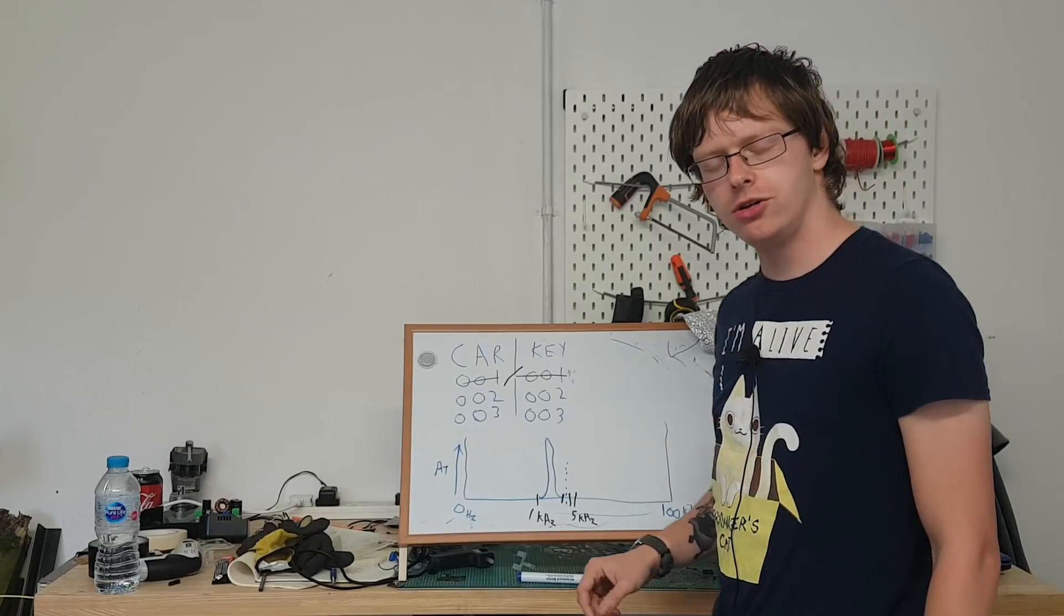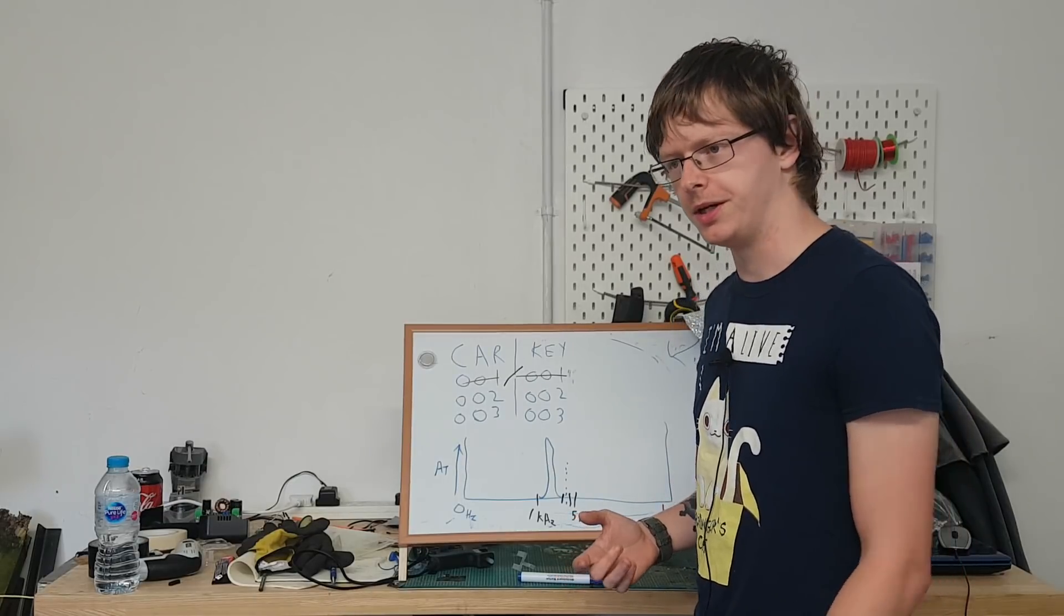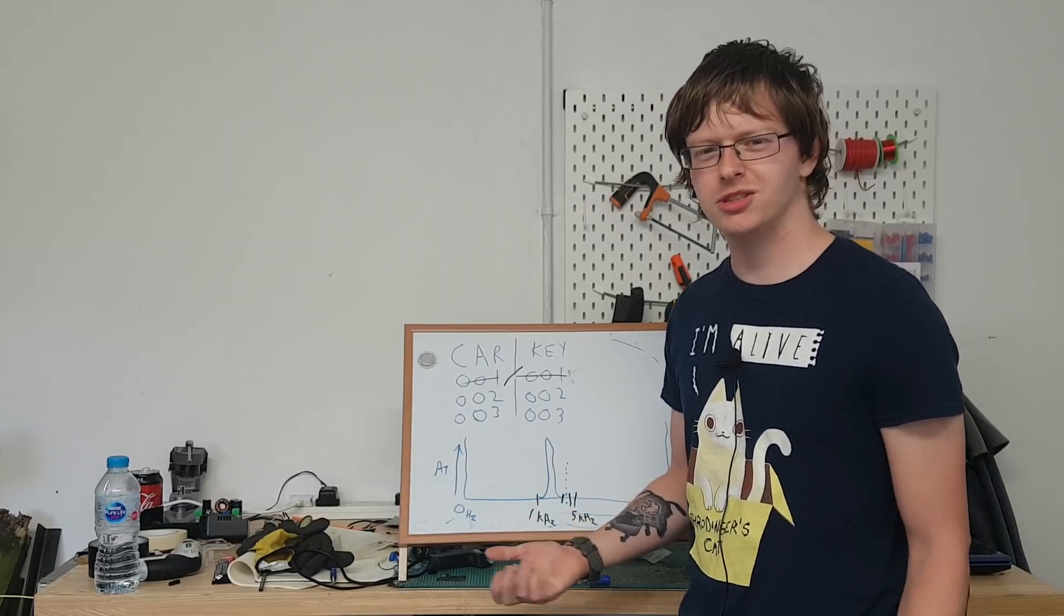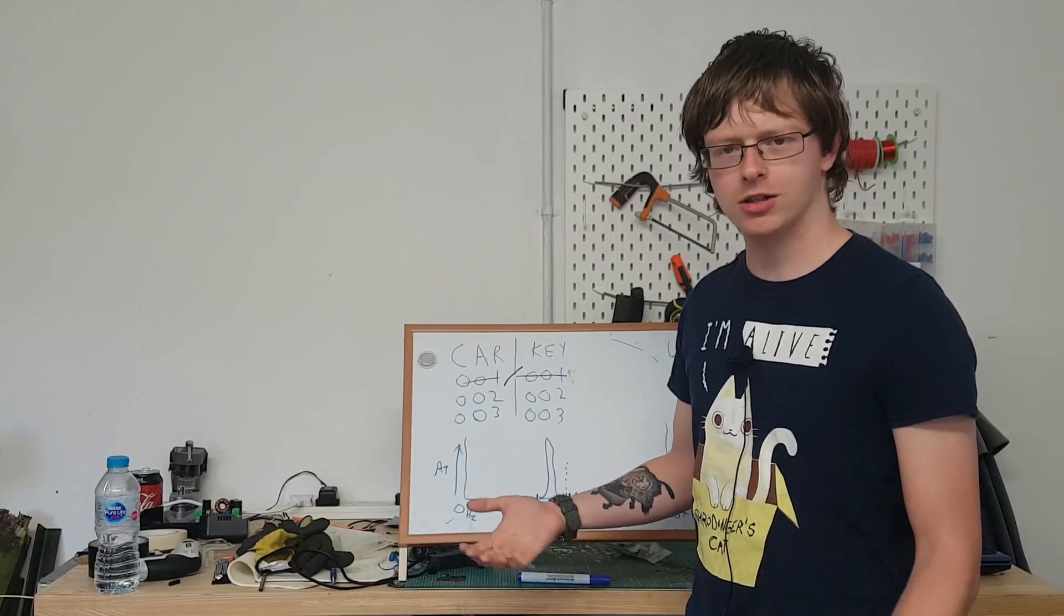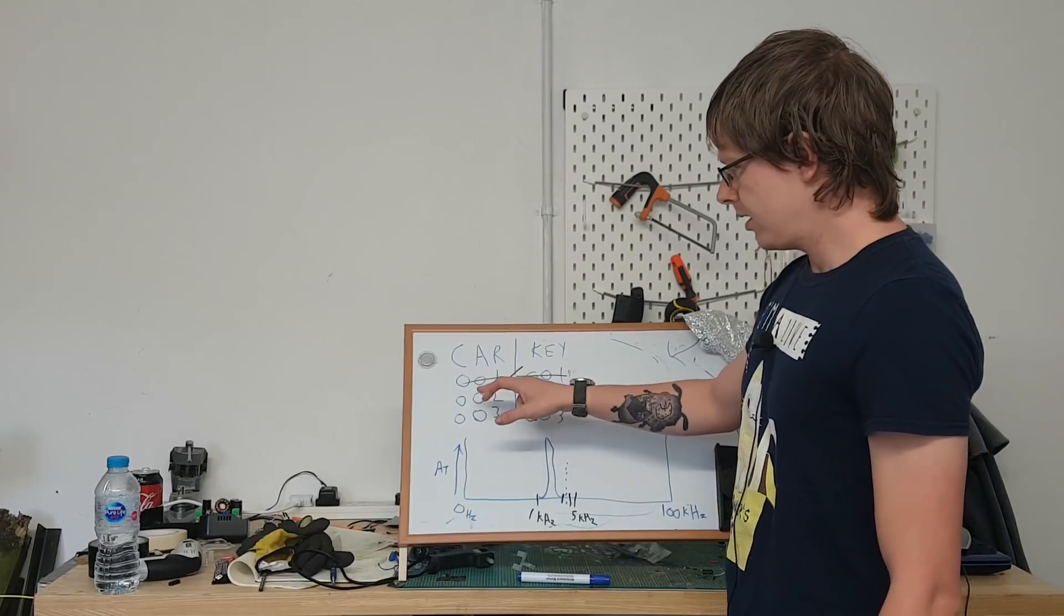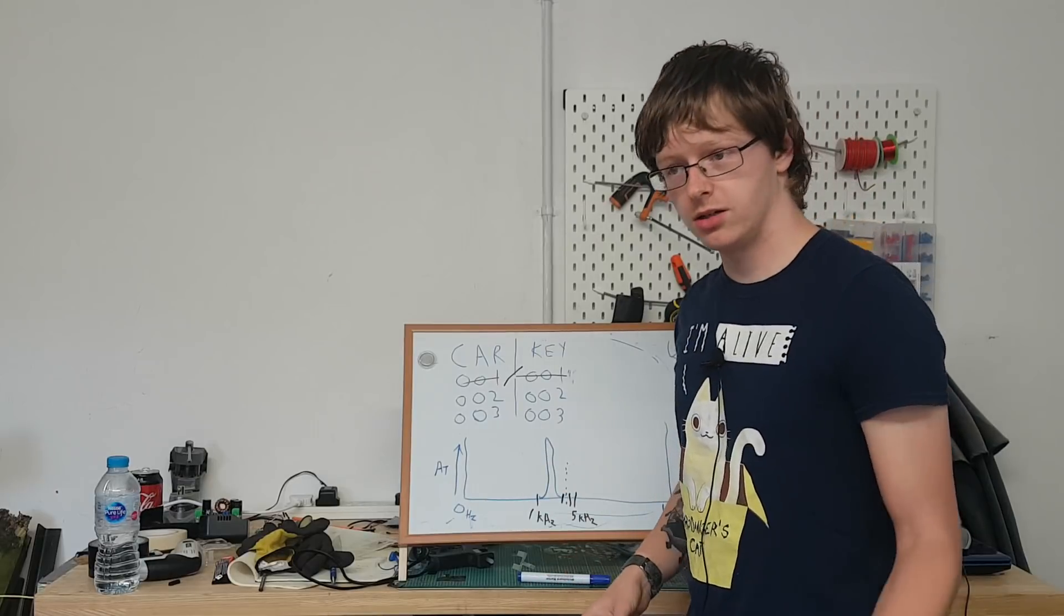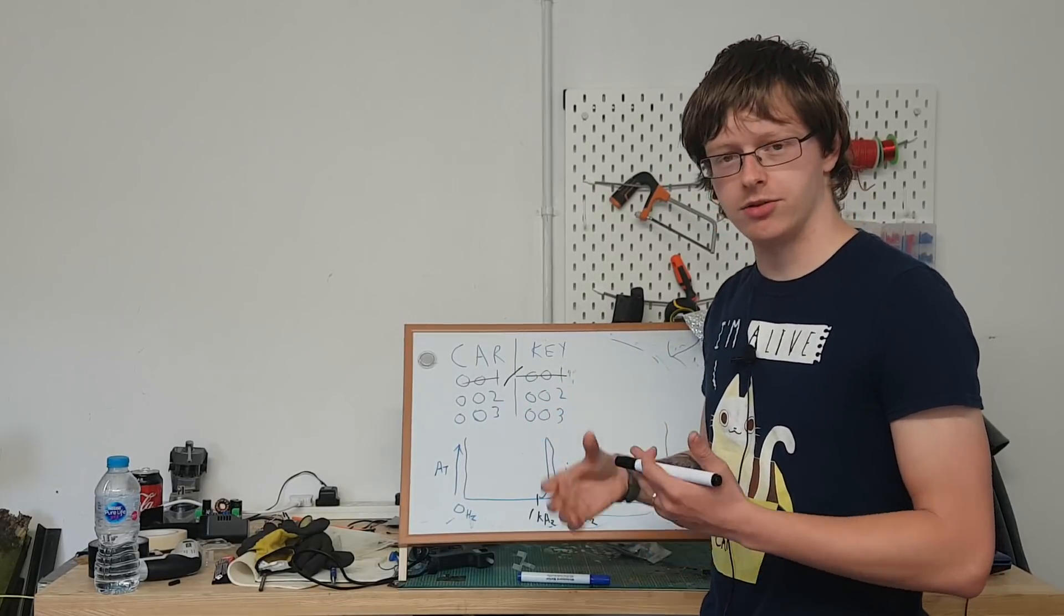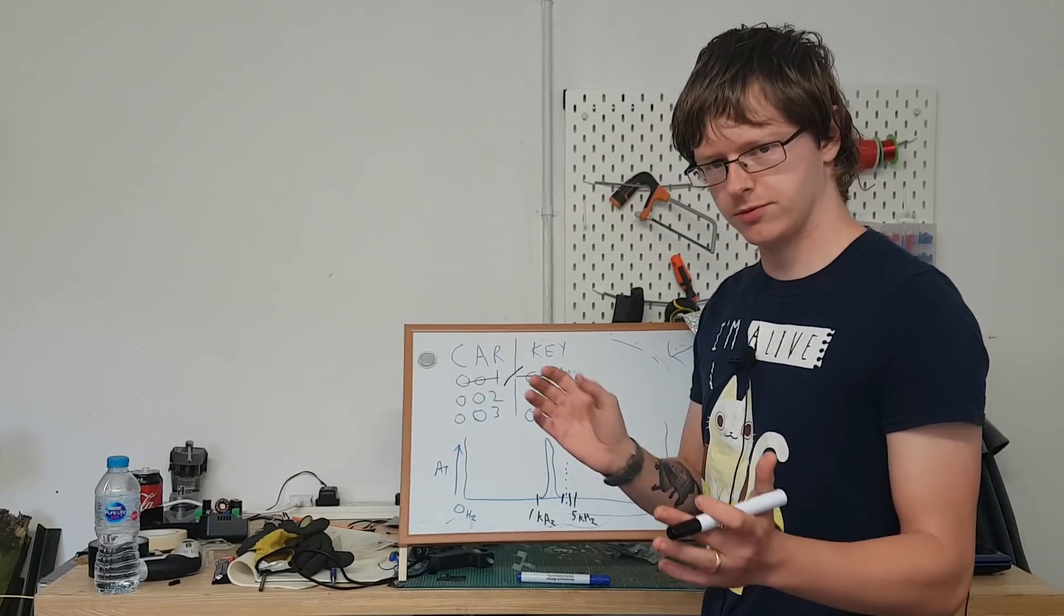Now how do you unlock the car so that the user or the victim in this case doesn't know that their signal's been interrupted? Well, whenever you press your key fob and your car doesn't lock first time, what do you do? You press it again and again and again until it unlocks or you get close enough that you just unlock it with the key. What you do is you have it programmed in GNU radio or there is a device called a RollJam which essentially does this and it's made from an Arduino so it's programmed in C.